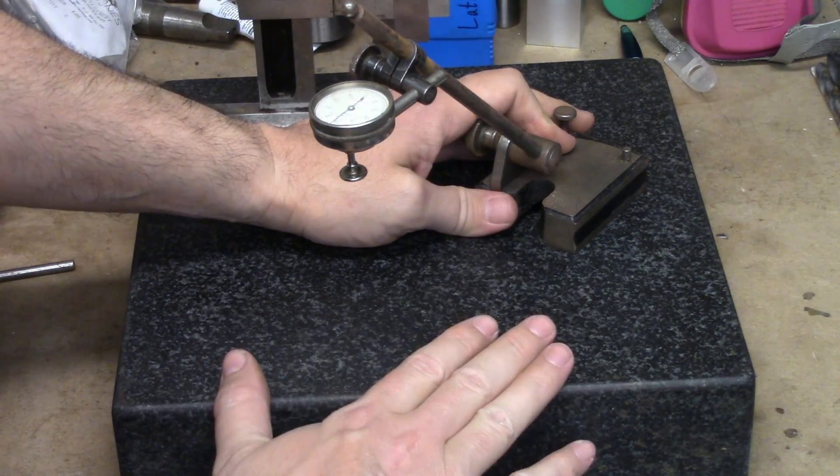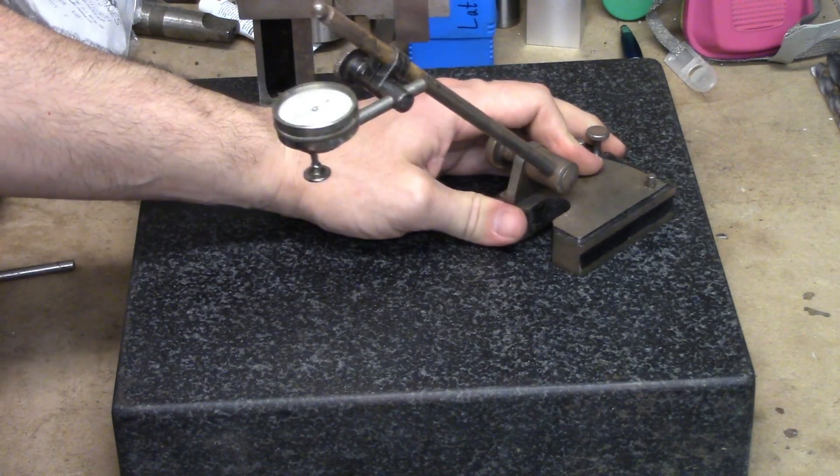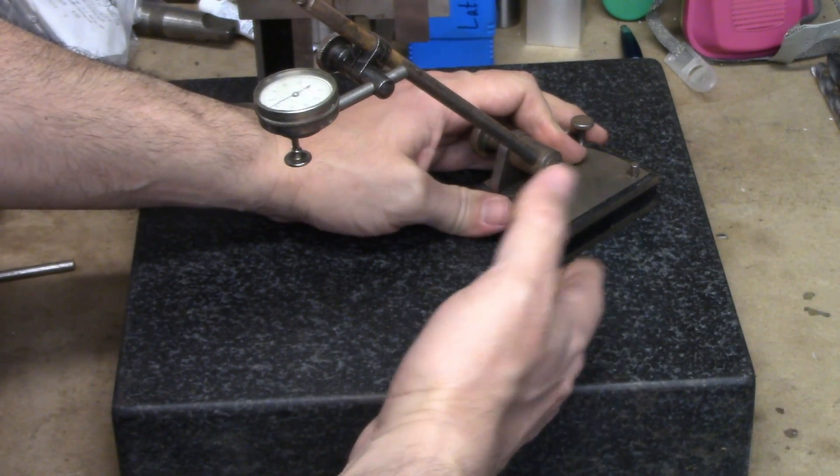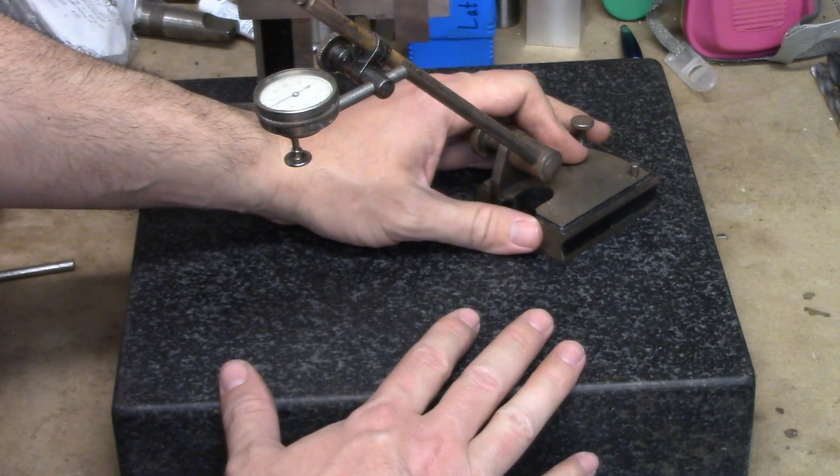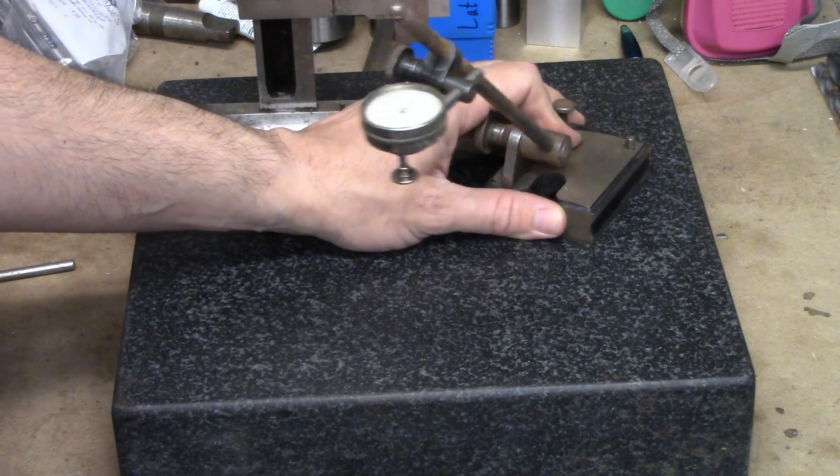You can also mount your indicator on a surface gauge. This will let you slide the indicator across a part on a surface plate to compare the dimensions against gauge blocks or check for flatness, parallelism, or squareness. Many of the mounting methods I've already mentioned work on the surface gauge as well.